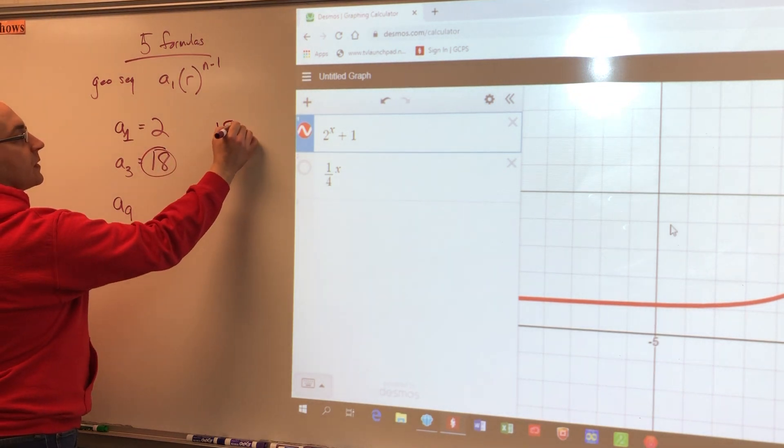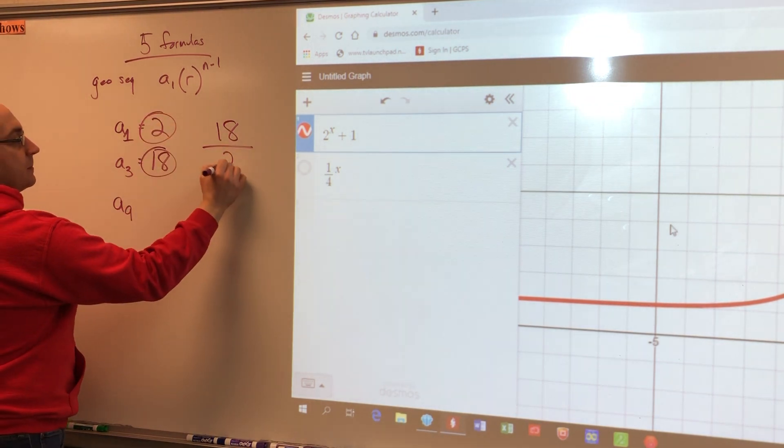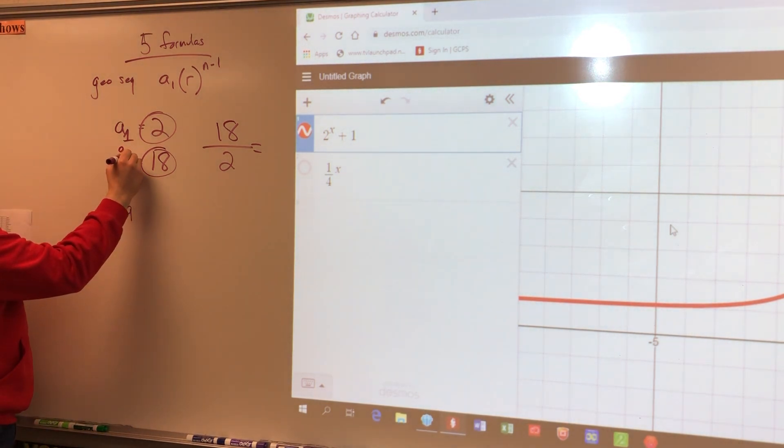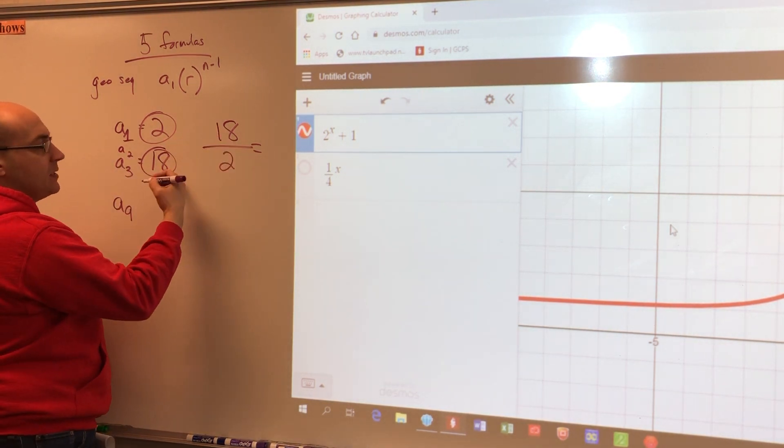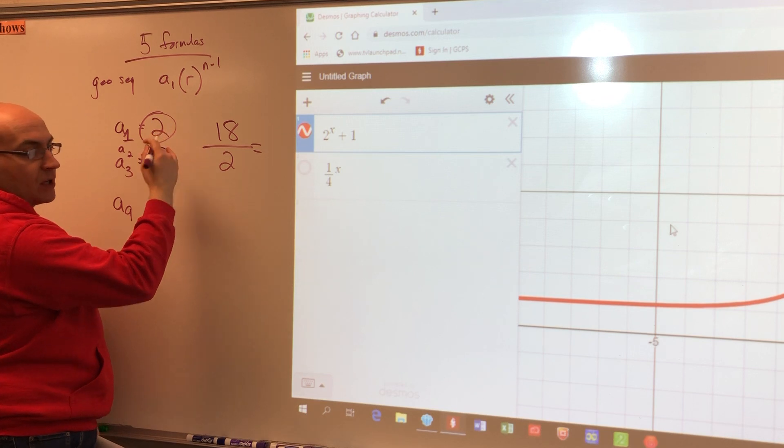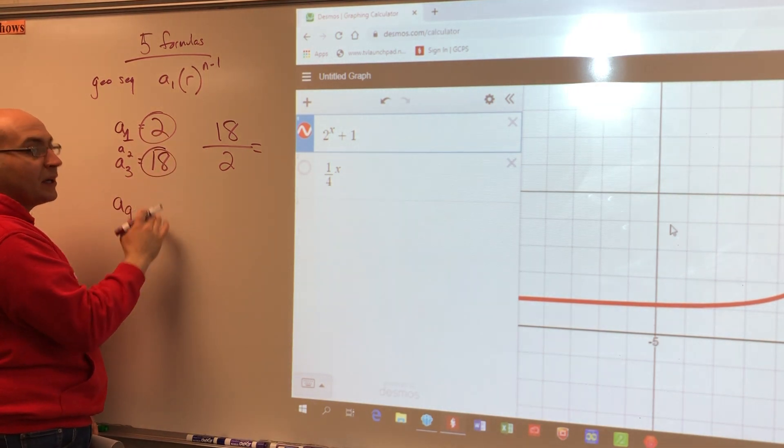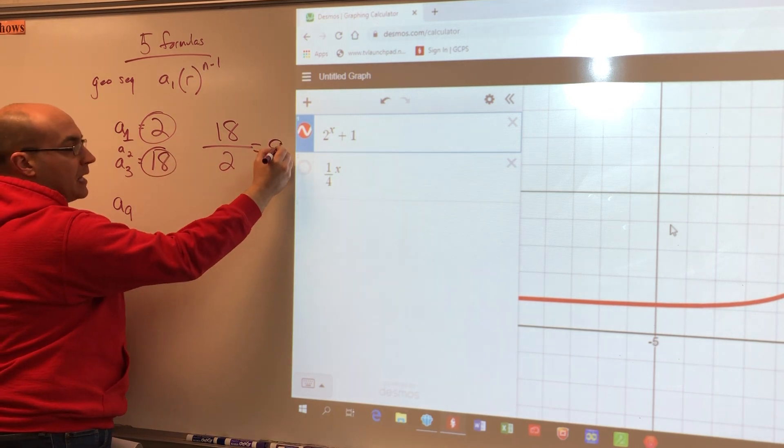You take the third term and you divide it by the first term. Now remember there's a gap here. There should be a second term in here, which we don't know yet. So first step is take the third term and divide it by the first term. Or if I give you a second and a fourth term, take the bigger term and divide it by the smaller term. That gives me nine.